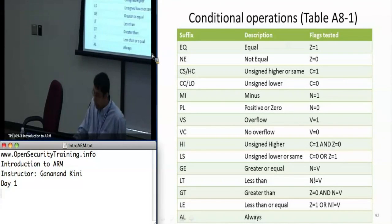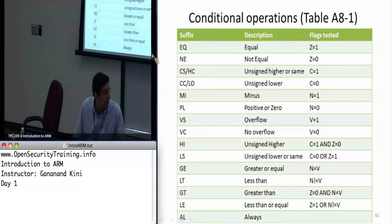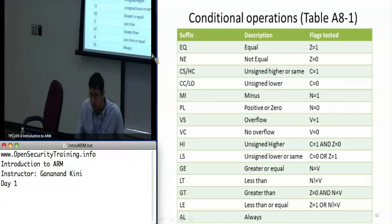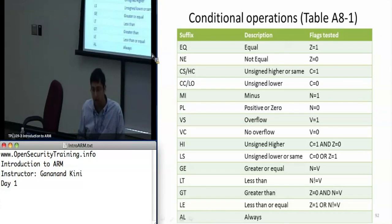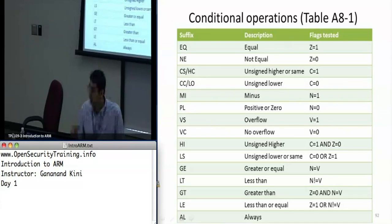You already know EQ and NE. There's also CS/HS, which is unsigned higher or same — it checks for the carry flag. You can branch based on whether the carry bit is set. MI is for negative, though it's usually never used. You typically use EQ, NE, GT, LT, GE, LE. AL is almost never used because it's pointless — you can just write the instruction directly. It uses the flags from the current program status register to determine whether the condition is met.